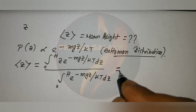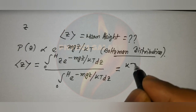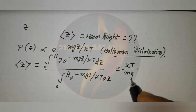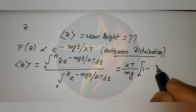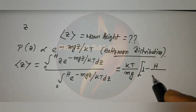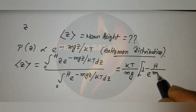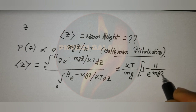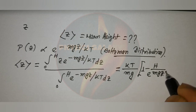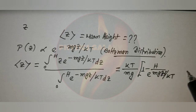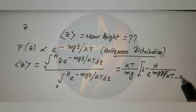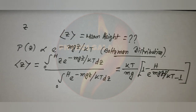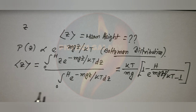Evaluating this, the mean height equals kT divided by Mg, times the quantity: 1 minus H divided by (e to the power MgH/kT minus 1). This is the mean height of the particle.